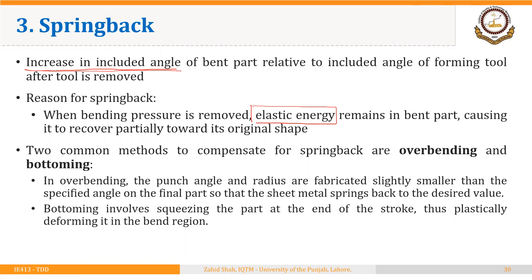Two common methods to compensate for springback are over bending and bottoming. In over bending, the punch angle and radius are fabricated slightly smaller than the specified angle on the final part so that the sheet metal springs back to the desired value. In bottoming, the part is squeezed at the end of the stroke, thus plastically deforming it in the bend region.